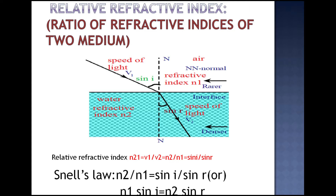The refractive index of the second medium with respect to the first medium is given by: N21 is equal to speed of light in medium 1 divided by speed of light in medium 2, that is N21 equals V1 by V2, or equivalently N2 by N1 equals V1 by V2.